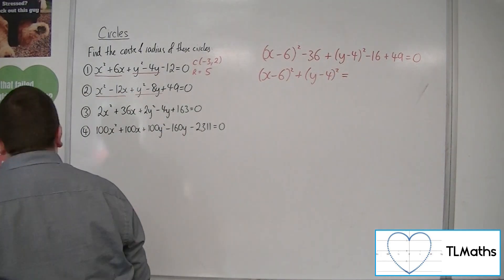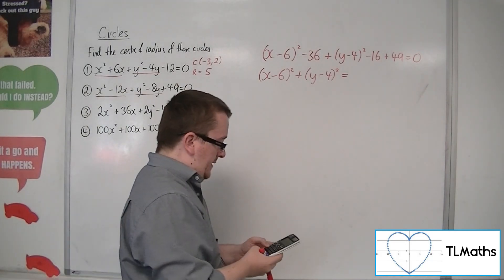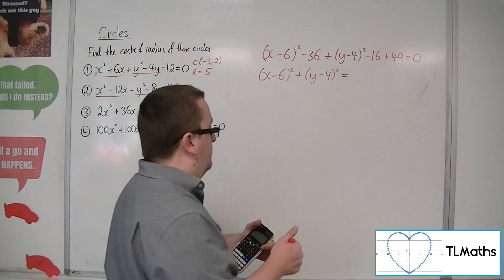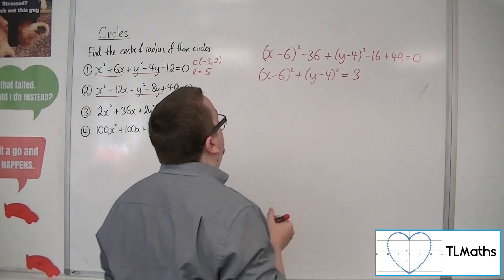I've got this minus 36, take away 16, plus 49, gets to be minus 3. So add the 3 to both sides.